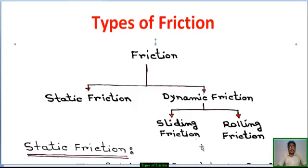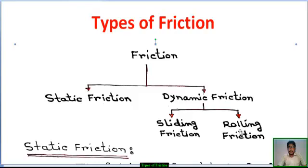Hello student. Welcome to my channel. Today we learn types of friction under engineering mechanics. Friction is mainly divided into two groups: static friction and dynamic friction. Dynamic friction is again mainly divided into two parts: sliding friction and rolling friction.